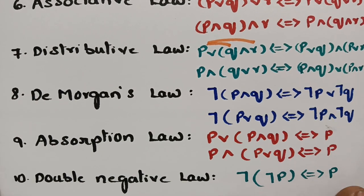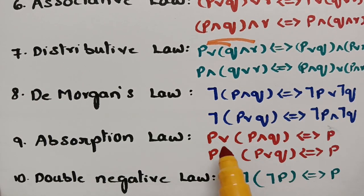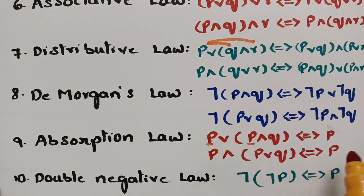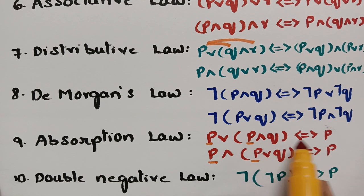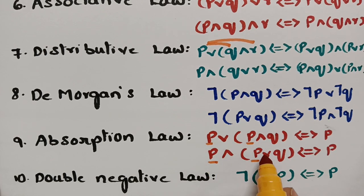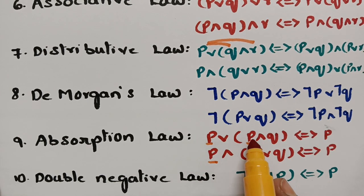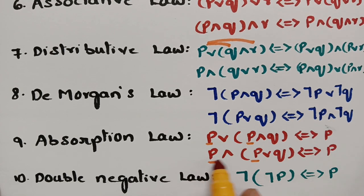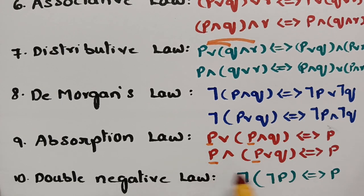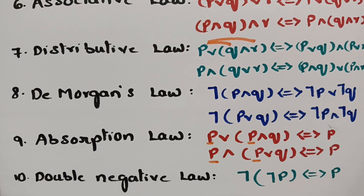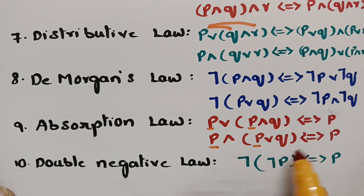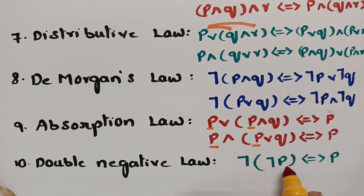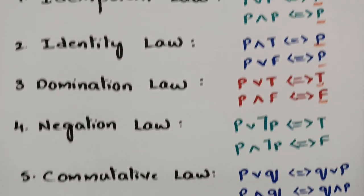Next is the absorption law. If p appears two times, it gets absorbed. So p OR (p AND q) equals p, and p AND (p OR q) equals p. According to absorption law, if there are two p's, the result is simply p — p is absorbed. And the last one is the double negation law: negation of negation p equals p, just like minus of minus equals plus.